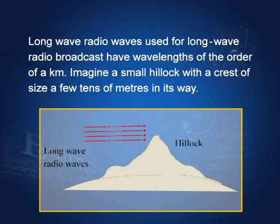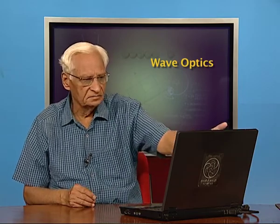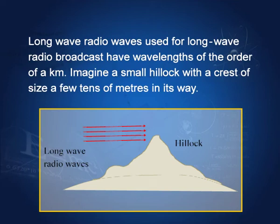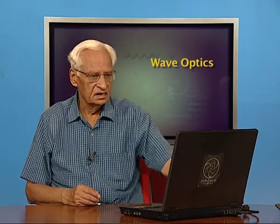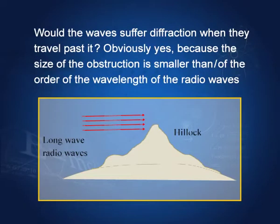Long radio waves used for long-wave radio broadcast have wavelengths of the order of a kilometer. Imagine a small hillock with a crest of a few tens to hundreds of meters in their path. The hillock is much smaller than the wavelength of one kilometer. When the waves pass through that, there will be bending — there will be a diffraction pattern.